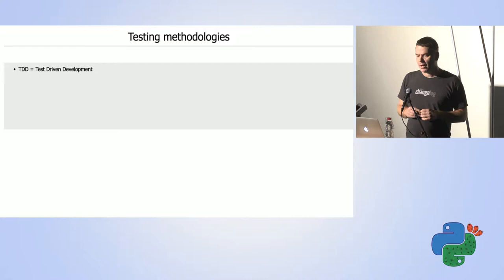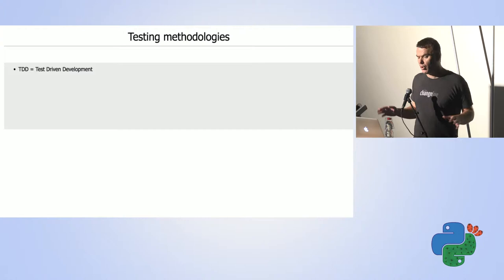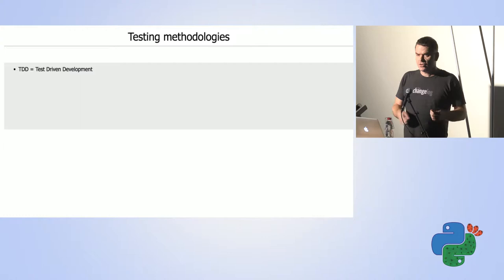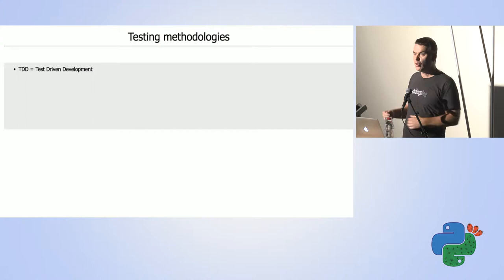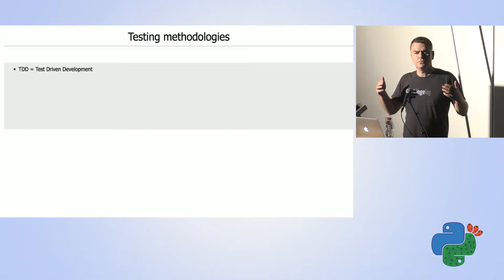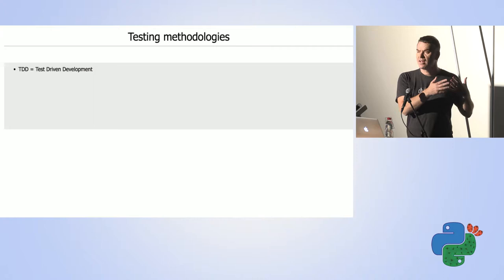There are basically two testing methodologies in the world. One of them is called TDD, which is Test Driven Development. The idea is that you write some tests that obviously fail because you don't have the code yet. Then you write the code, the test passes, you check in the version control, you write more tests, more code, version control, and so on. In this way, as you write your code, you can always run your tests and make sure that things written earlier are still working.